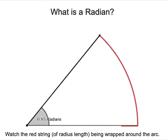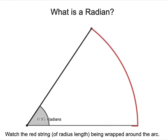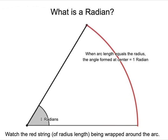When the complete red string has been wrapped around the circumference of the circle, the angle formed by it at the center of the circle is what is known as one radian.